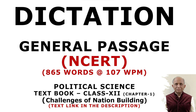Now that the country was independent, the time had come to realize the promise of freedom. This was not going to be easy. India was born in very difficult circumstances. Perhaps no other country by then was born in a situation more difficult than that of India in 1947. Freedom came with the partition of the country. The year 1947 was a year of unprecedented violence and trauma of displacement. It was in this situation that independent India started on its journey to achieve several objectives.